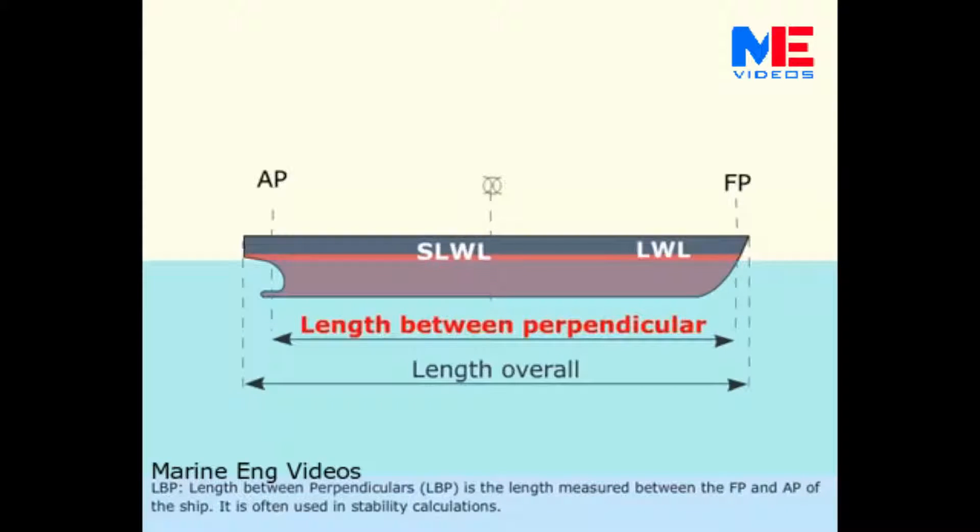LBP, Length Between Perpendiculars. LBP is the length measured between the FP and AP of the ship. It is often used in stability calculations.